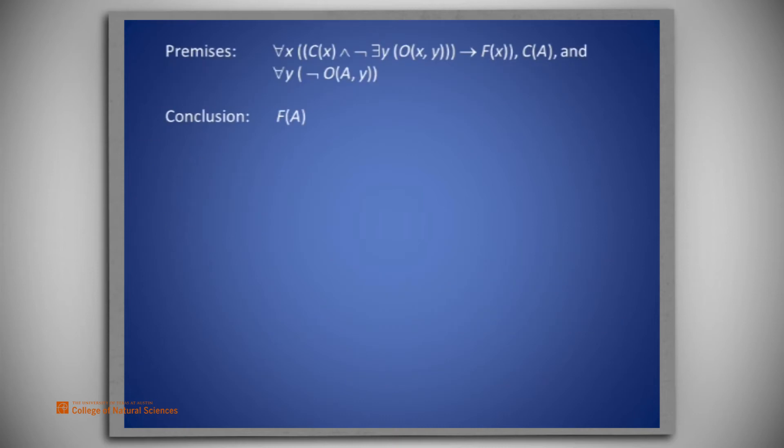Once again, symbolically, the premises are for all x, C(x) and not there exists y, such that O(x, y) imply F(x), C(A) and for all y, not O(A, y). The conclusion is F(A).